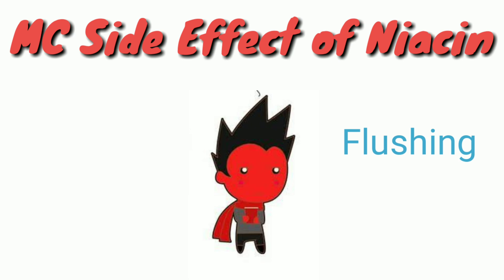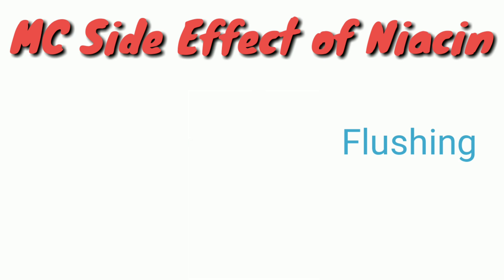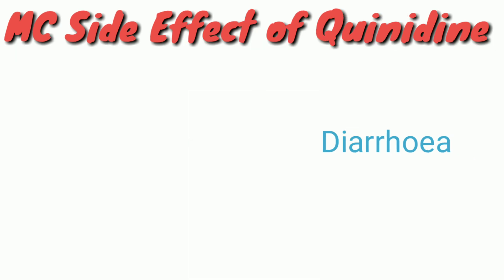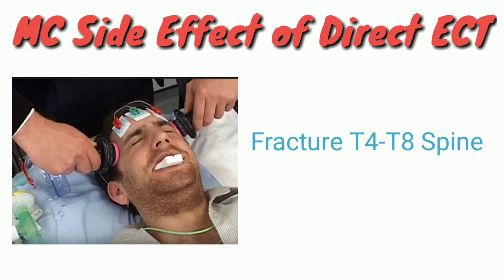The most common side effect of niacin is flushing of the skin and body parts. The most common side effect of quinidine is GIT upset along with rapid gut motility. The most common side effect of direct ECT is fracture of the thoracic spine; direct ECT refers to electroconvulsive therapy without anesthesia.